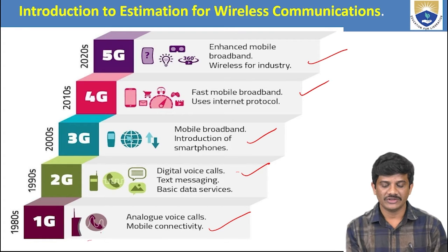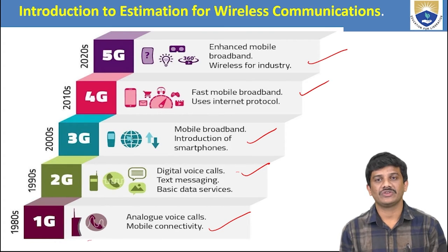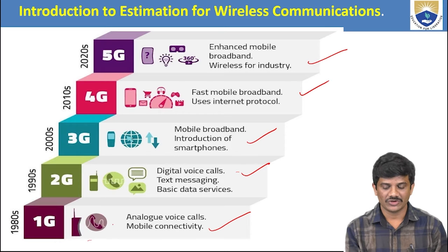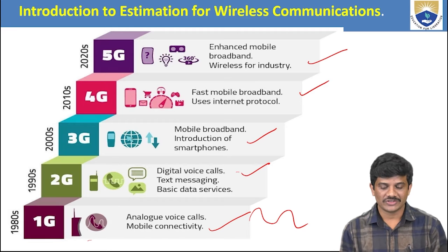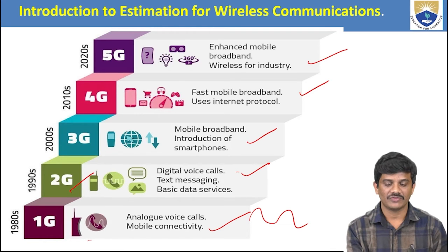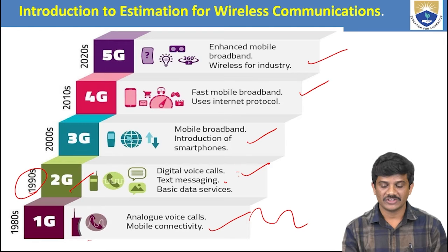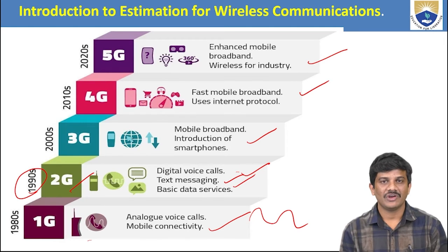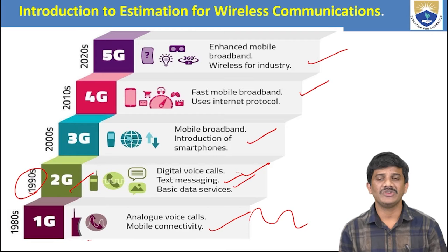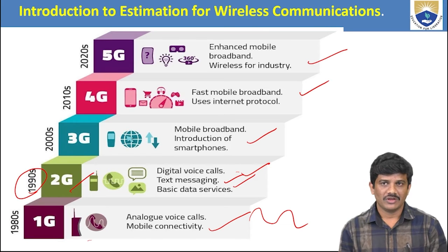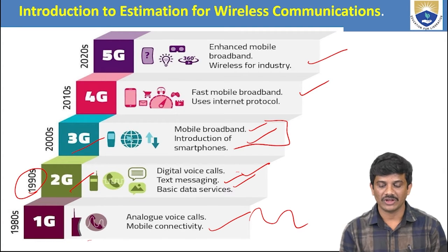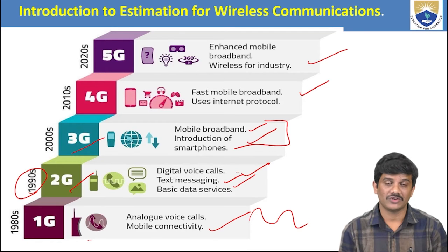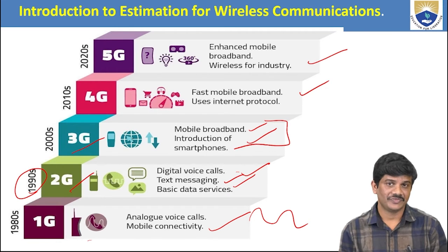In 1G, we had analogue voice calls. In 2G (1990s), we used digital voice calls, text messages, and basic data service — the data transfer rate was in kbps only. In 3G (entering 2000), mobile broadband and smartphones were introduced. Here we introduced smartphones in the year 2000 with the 3G network.